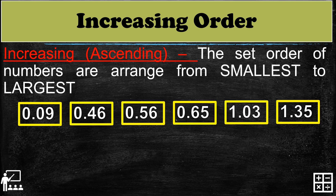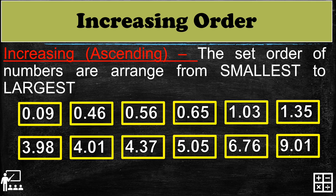Another example: 3 and 98 hundredths, 4 and 1 hundredths, 4 and 37 hundredths, 5 and 5 hundredths, 6 and 76 hundredths. As you can see, the numbers are arranged from smallest to largest, so the order of this set is the increasing order.